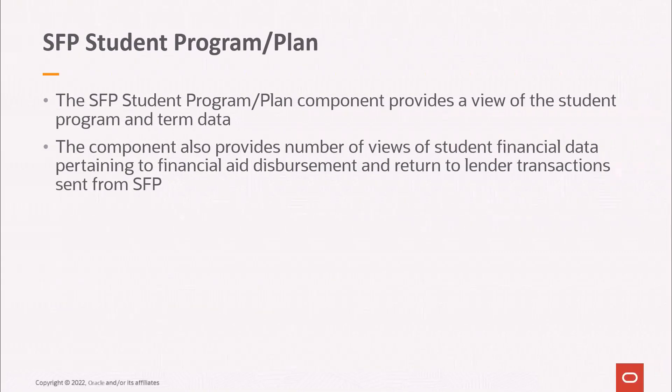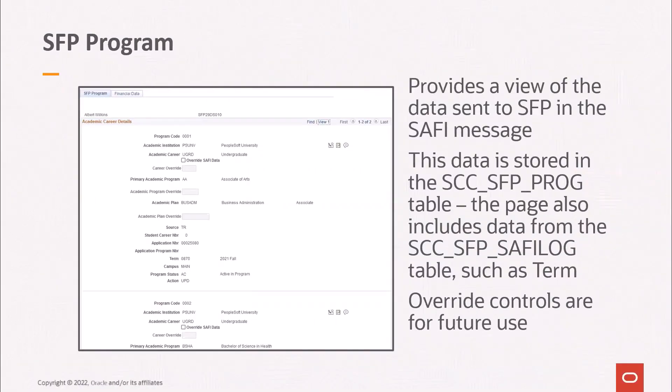The SFP student program plan component provides a view of the program plan and term data used to build the student's SFP program record. The component also includes a number of views of student financials data pertaining to financial aid disbursements and return to lender transactions sent from SFP. Looking at a sample SFP program page, data is presented by SFP program code, and the CS career, program, and plan data are the attributes the SAFI handler uses to map an SFP program record. As data is exchanged with SFP over time, the data displayed will also reflect any updates to the SFP program record, such as a change of program or plan. There is generally one SFP program record per CS career. If a student completes an undergraduate program and moves to a graduate program, a new SFP program record would be created. A new program record could also be created if a plan change within the same career results in a change of program type and the SFP integration option for graduated status has been set to yes.